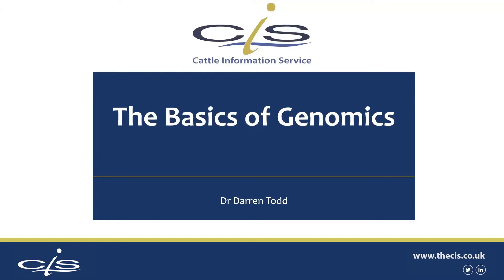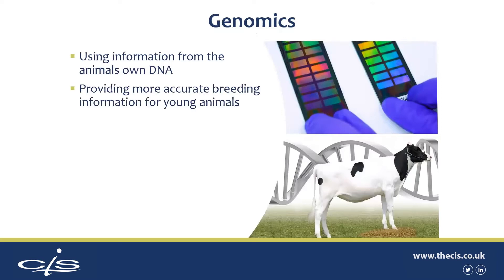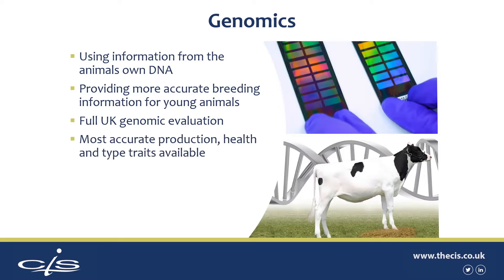Hello and welcome to the basics of genomics. My name is Darren Todd. I'm the geneticist with the Holstein UK group. Genomics is about using information from the animal's own DNA, and that information is used to provide more accurate breeding information, particularly for young animals. This information is used to produce a full UK genomic evaluation, which is the most accurate information on production, health and type traits available in the UK. Ultimately we want to use genomic information to identify your best future herd.